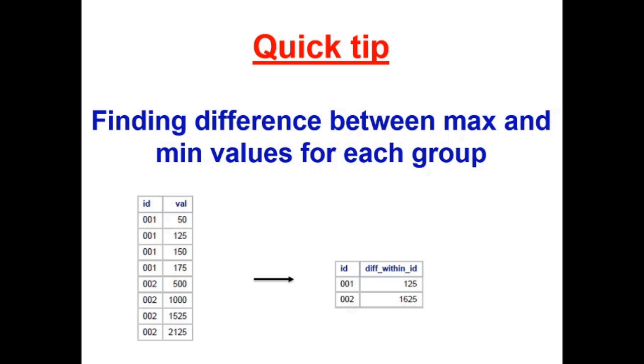Today we're going to talk about a quick tip. This quick tip is about finding the difference between max and min values for each group, and we can understand this better by looking at an example shown below.